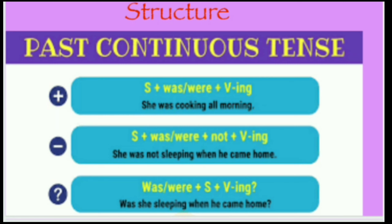Look at the structure for past continuous tense: Subject + was/were + first form of verb with -ing. 'Was' and 'were' are the past forms of 'be.' For example: 'She was cooking all morning.' Here 'she' is the subject, 'was' is the past form of 'be,' and 'cooking' is the first form 'cook' with -ing.